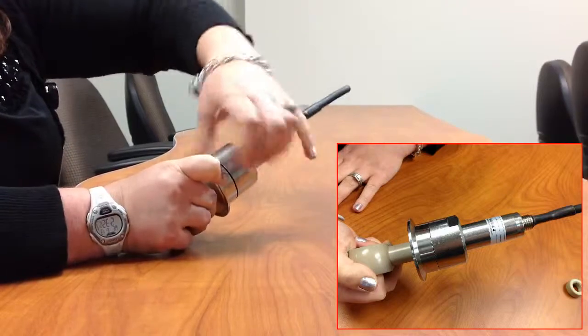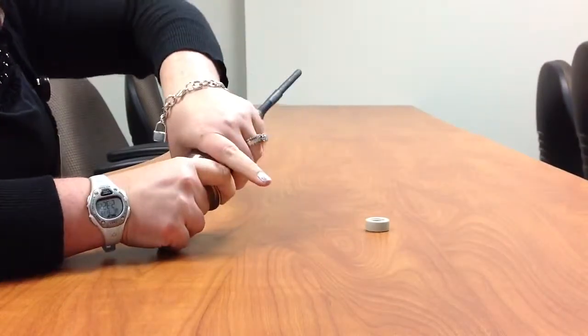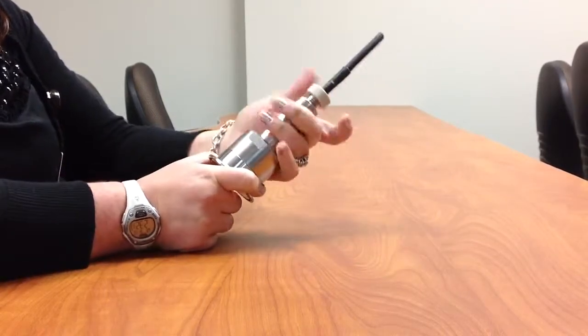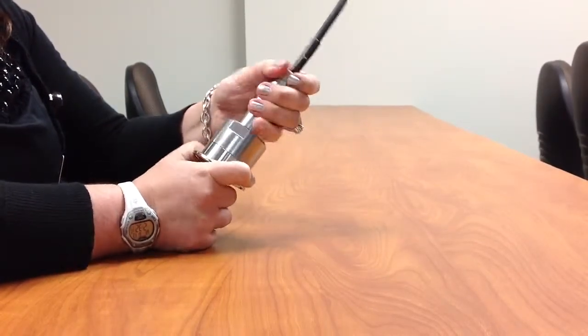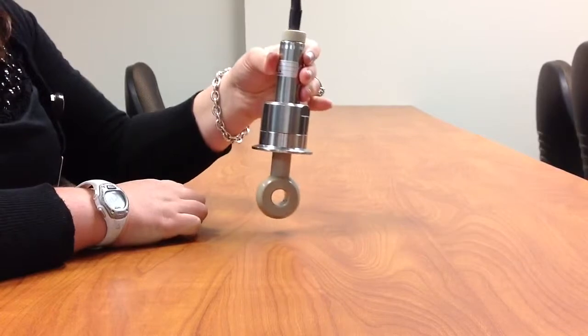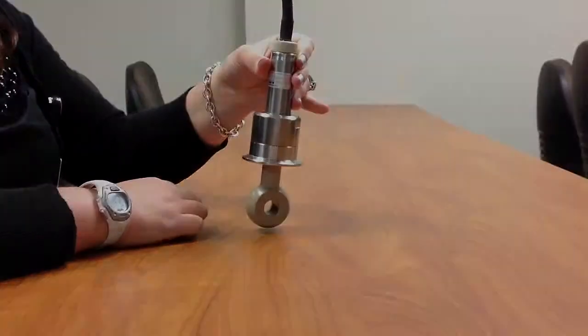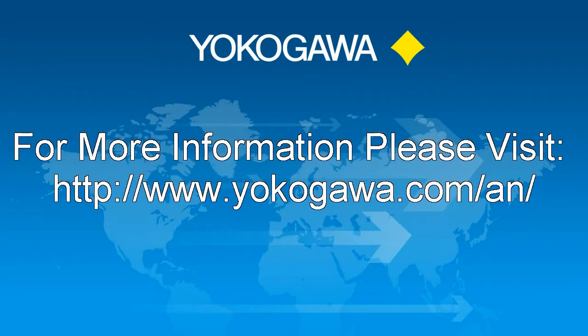Then you thread the last locking nut down. Make sure they're tight. Then the last step is you thread the plastic nut back onto your sensor, and now your sensor's ready for installation into your process. There you go. Thank you.